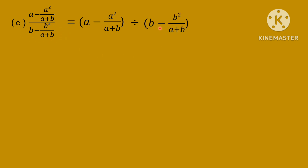That's what we call B minus B square by E plus B. If you want the unit to show you, you will have a unit. If you see the results, you will see the results of the result.